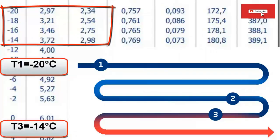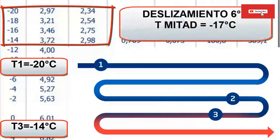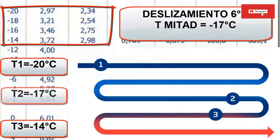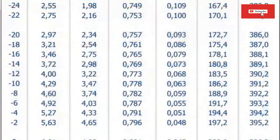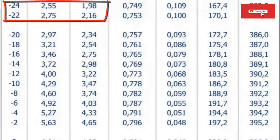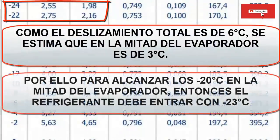Step six: we can assume that in the middle of the evaporator the temperature has increased by half, that is a gain of three degrees Celsius. Step seven: since up to the middle the increase is three degrees Celsius, in order to have minus 20°C in the middle of the evaporator we adjust the inlet temperature of the liquid refrigerant to minus 23 degrees Celsius.